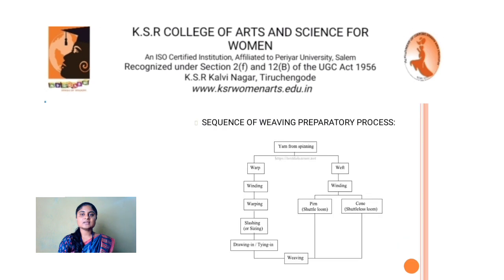The sequence of the weaving preparatory process begins with yarn from spinning, which is divided into warp and weft. Under the warp: winding, warping, slashing, drawing in or tying in. Under the weft: winding, pern and cone winding. Finally, it comes to weaving.